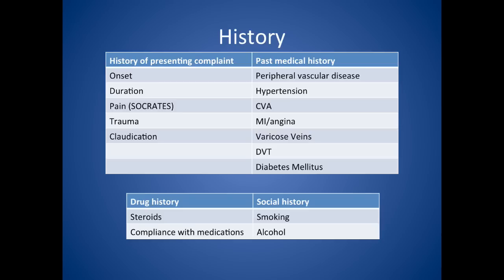Looking at past medical history, you'd want to rule out peripheral vascular disease. They might have had a stroke, a heart attack, or angina, or they might have varicose veins, a previous DVT, or diabetes. For drug history, are they a steroid user, and are they compliant with their medications such as oral hypoglycaemic agents in diabetes? For social history, ask about smoking and alcohol.